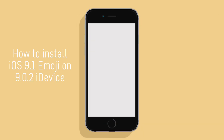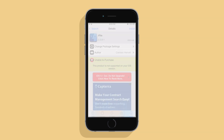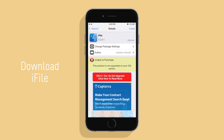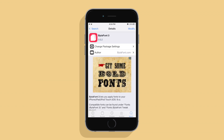Hey guys, so in this video I want to talk about how to install iOS 9.1 Emoji on your iOS 9.02 devices. You're going to want to download these two files: iFile and Vitaphone 3.